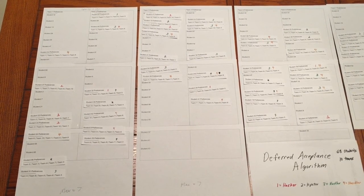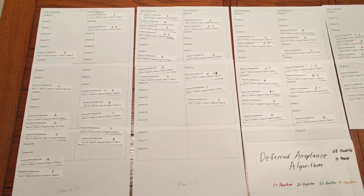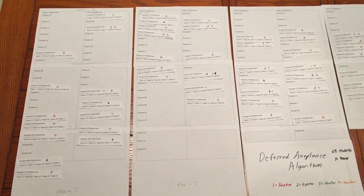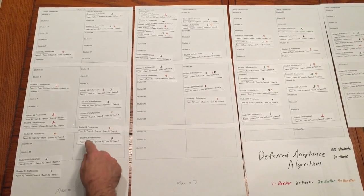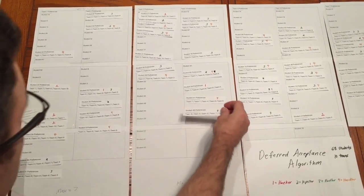Finally, in Phase 4, you can make any final adjustments you see fit to balance out the teams. For example, it might make more sense for Student 26 to be on Team 4.